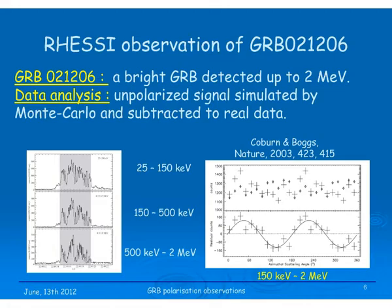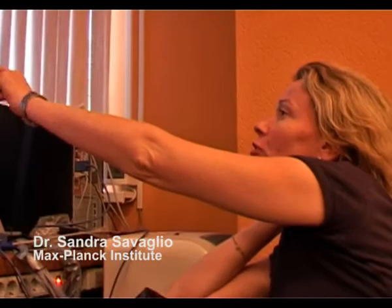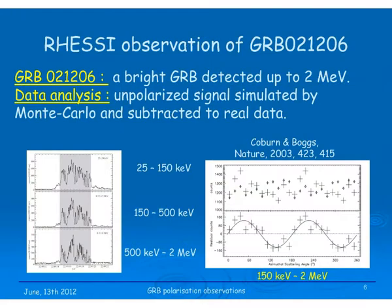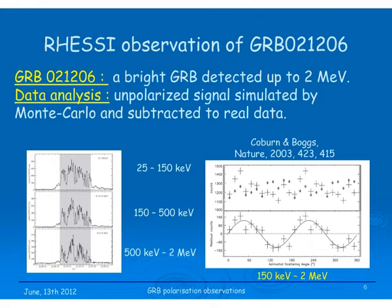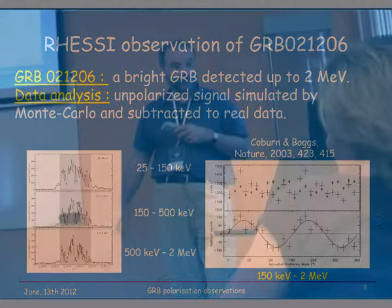A question from the audience: the signal plot is confusing because the data are repeated to show the sinusoid, but the real data span only 0 to 180 degrees since it is a pi-periodic signal. The real data are the crosses; simulated non-polarized response is subtracted to give the final points. The discussion confirms that statistics can be complicated, and the artifact illustrates the difficulty of polarization data analysis.